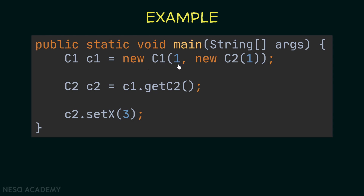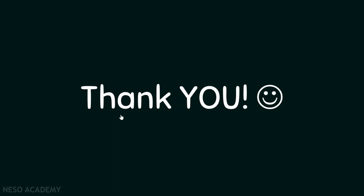Let me show you why. I'm creating an object of class C1 with x equal to 1 and a C2 object also with x equal to 1 — storing a reference to that C2 object. An immutable object must not allow any modifications. But here, I create a C2 variable and assign it to c1.getC2(), which returns the C2 attribute of the c1 object. Now I can call setX(3) on that C2 reference, changing the x of the c2 attribute inside c1. So we are able to modify the content of the c1 object — meaning C1 is not immutable. Thanks for watching and I'll see you in the next video.